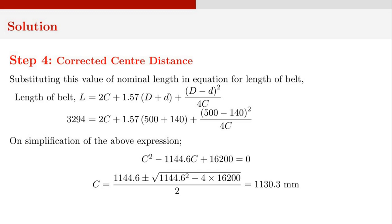In step 4, we find the corrected center distance. Since the belt length has changed, the center distance must also change. The revised center distance is found by substituting the new belt length L equal to 3294 mm, D equal to 500 mm, and d equal to 140 mm back into the belt length equation and solving for C. On simplification, we get a quadratic equation: C squared minus 1144.6C plus 16200 equals 0. Solving for C gives capital C as 1130.3 millimeters.